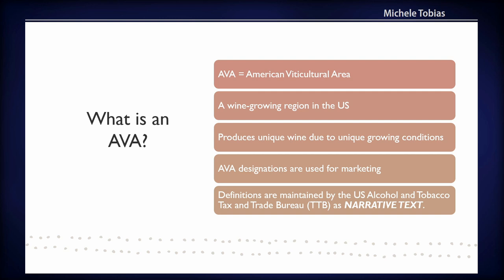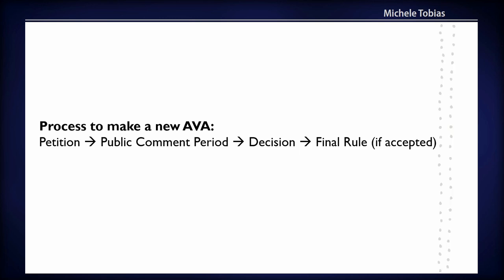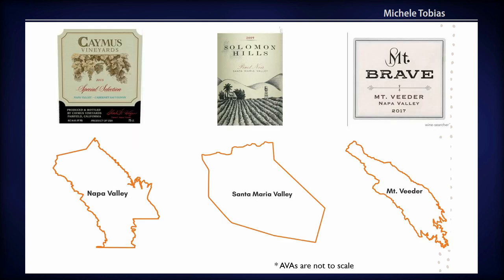AVA boundaries are stored as narrative text, which is an interesting way to store spatial data. I'm interested in looking at these regions, these polygons, and finding out more about them. The process to make an AVA starts with a petition — somebody writes an application and submits it to the federal government, there's a public comment period, and then the government reviews it and makes a decision.